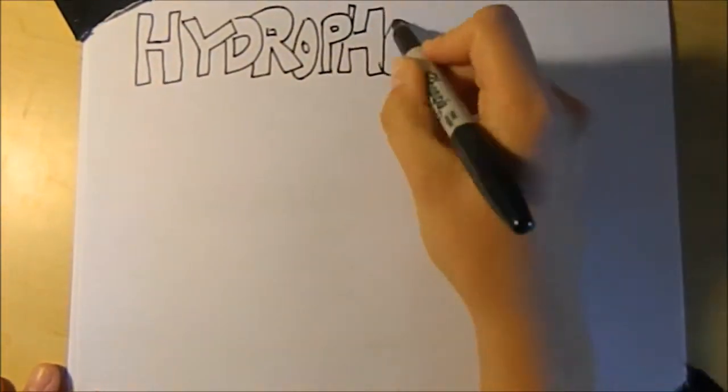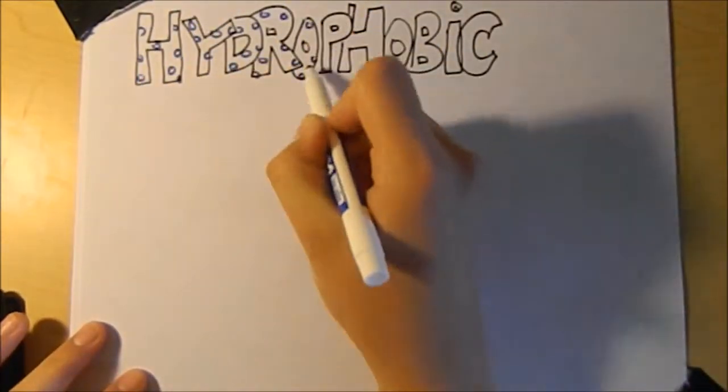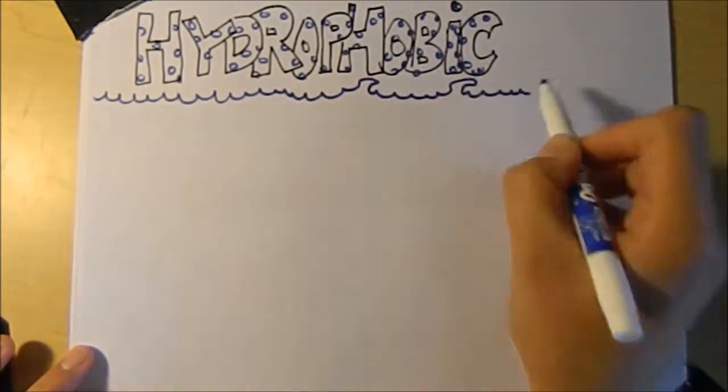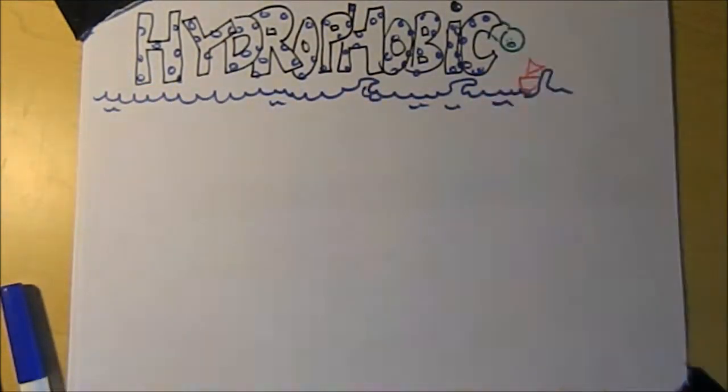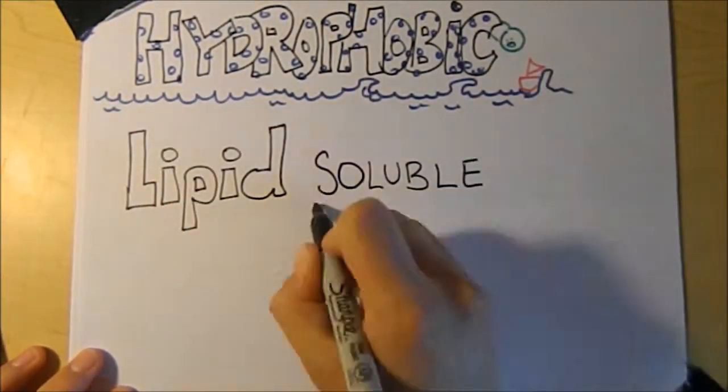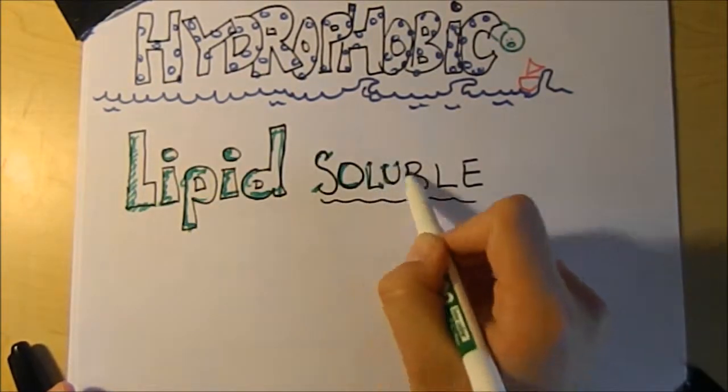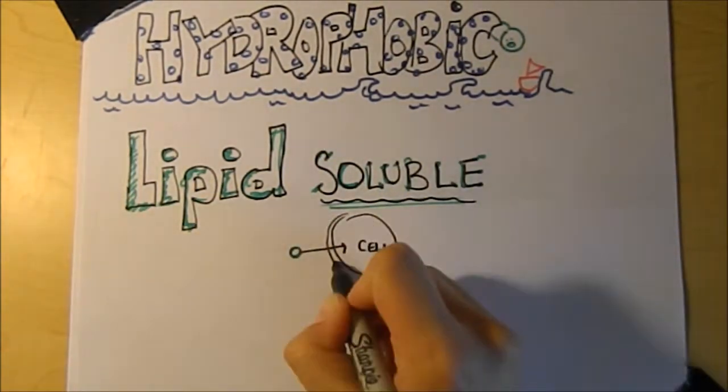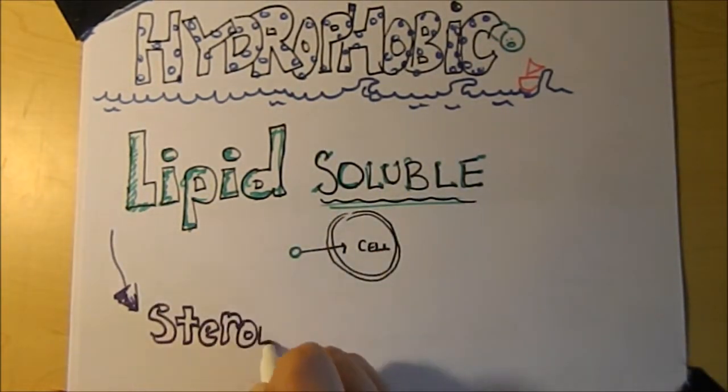Thyroid hormones are hydrophobic, which means they are water-fearing. They are also lipid soluble, which means they can cross over the cell membrane. Steroid hormones are also this way.